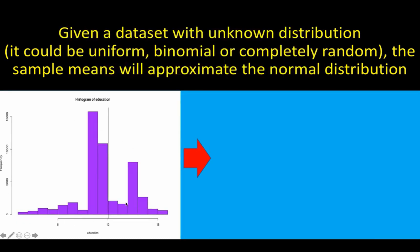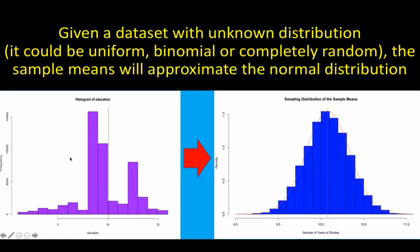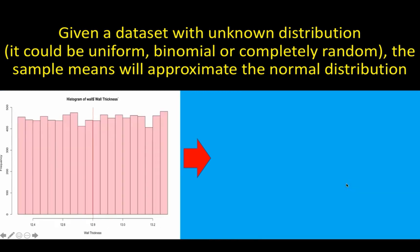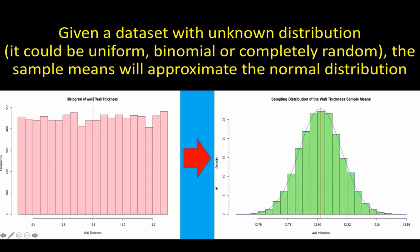The same is true with other distributions — the sampling distribution of their sample means would also follow a normal distribution. So at this point, we are going to perform a simulation, and I'm going to show you how we generate the graph on the right from these data points on the left. Let's go to RStudio.